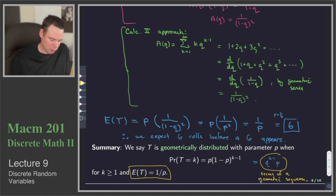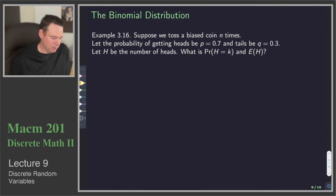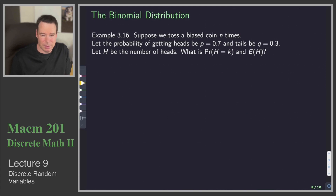So that was the geometric distribution, motivated through that example of continually rolling until some success happens. This next distribution, the binomial distribution, we take a different problem.